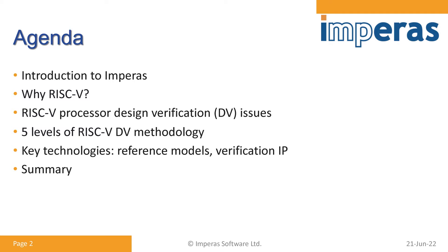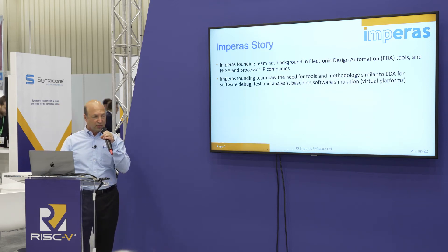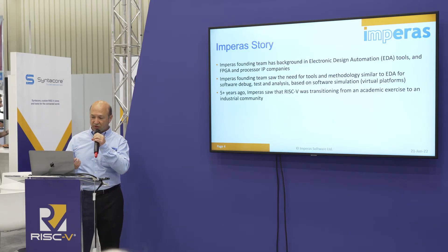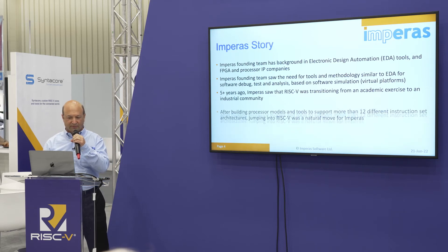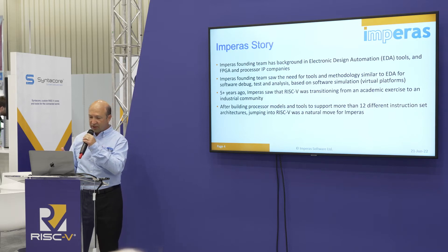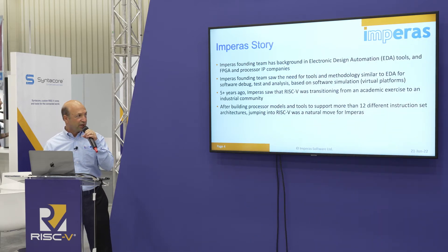Our founding team has a background in EDA tools and also FPGA design and processor IP companies. We saw the need for tools and methodologies similar to EDA, but on the software side. Then five years ago, we saw the RISC-V technology—the instruction set—transitioning from an academic exercise into an industrial community. Because we had been building processor models for other ISAs, the transition to RISC-V was a pretty natural move for Empirous.